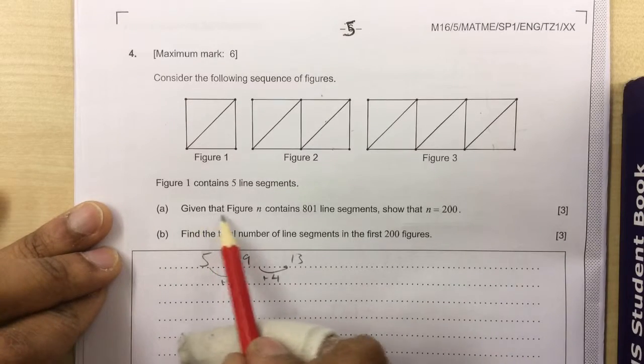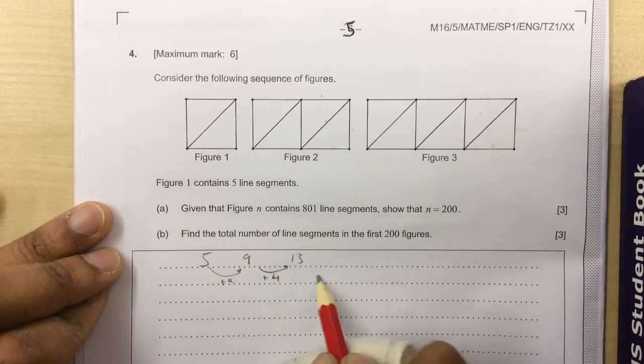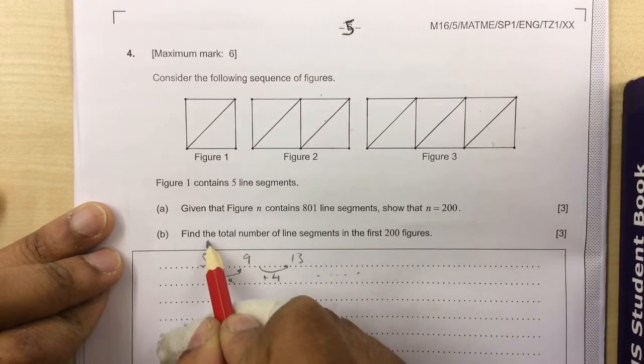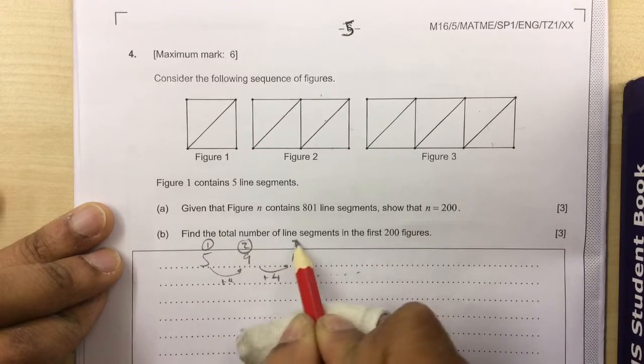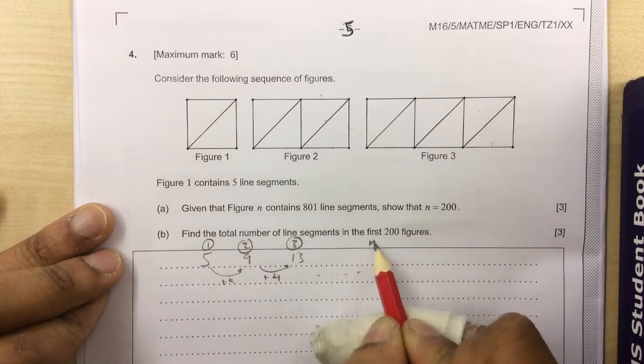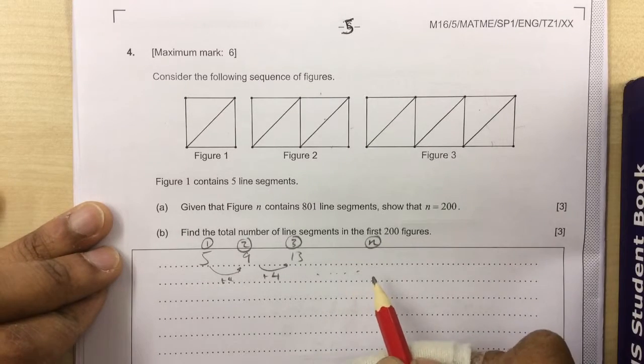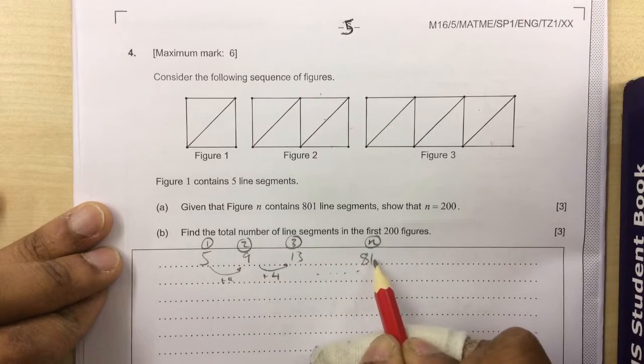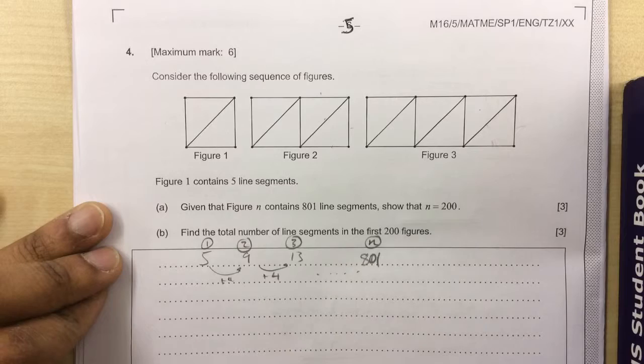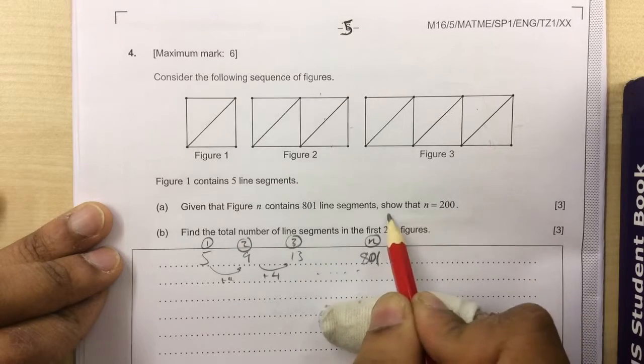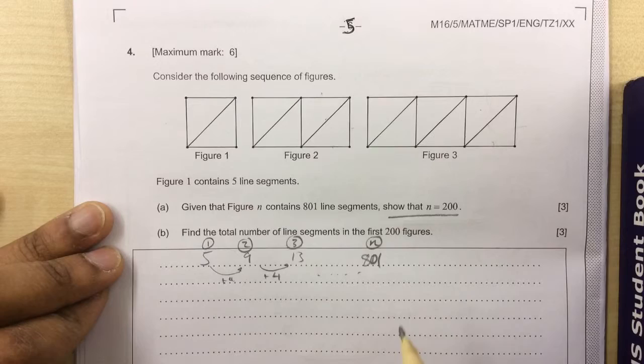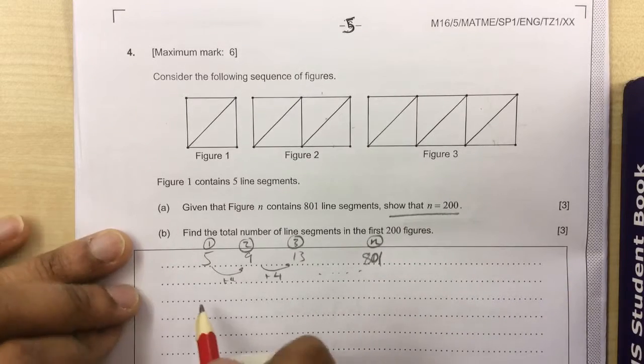So part A says, given that figure N—so this is 1, 2, 3, figure 3, figure N. Figure N has got 801 line segments. Show that N equals 200. Now it says show, so we cannot use that in our working. We've got to get to that as an answer.